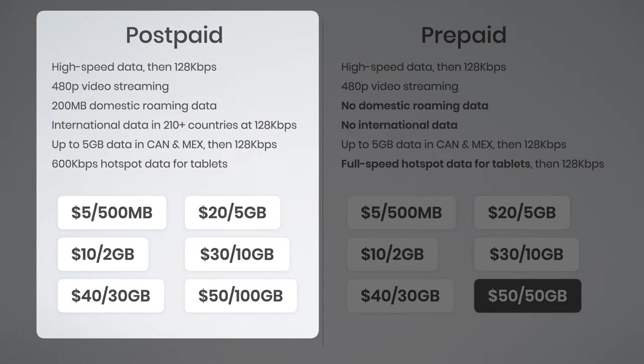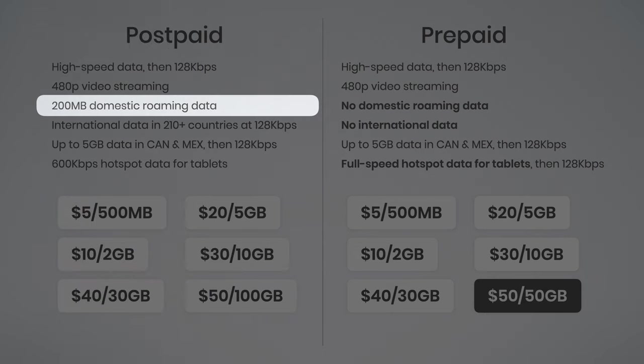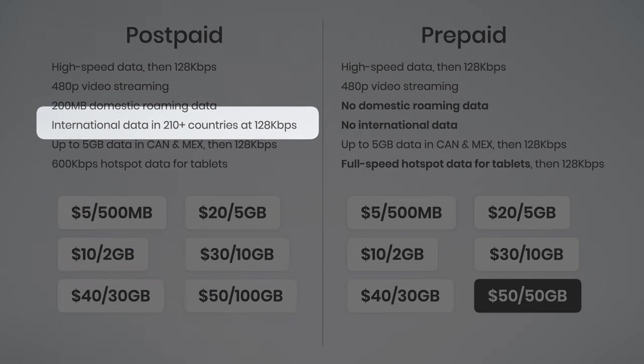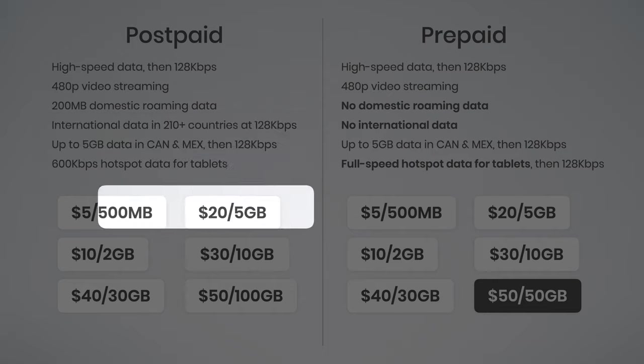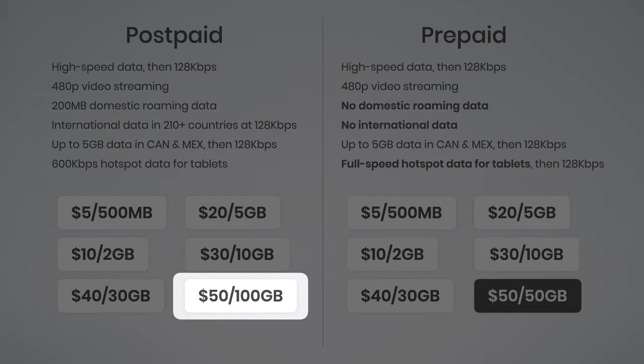Honestly, I think the postpaid plans are a little better. I love the included domestic roaming data and the included international data — even if it's slow, at least your devices will work when traveling abroad. And I absolutely love that $50 100-gig option. That's one of the best value plans available on the T-Mobile network.